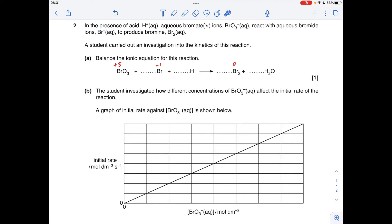So the reduction process is this plus five to zero, so that's a lowering of five in the reduction process. Obviously, five electrons are being gained there.